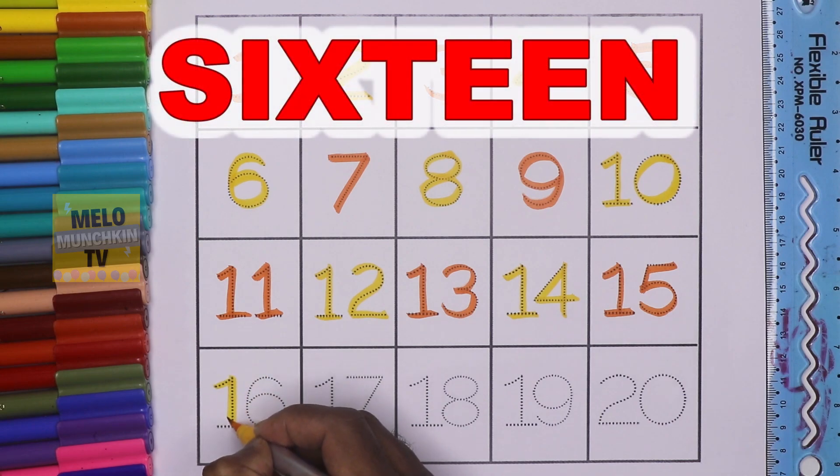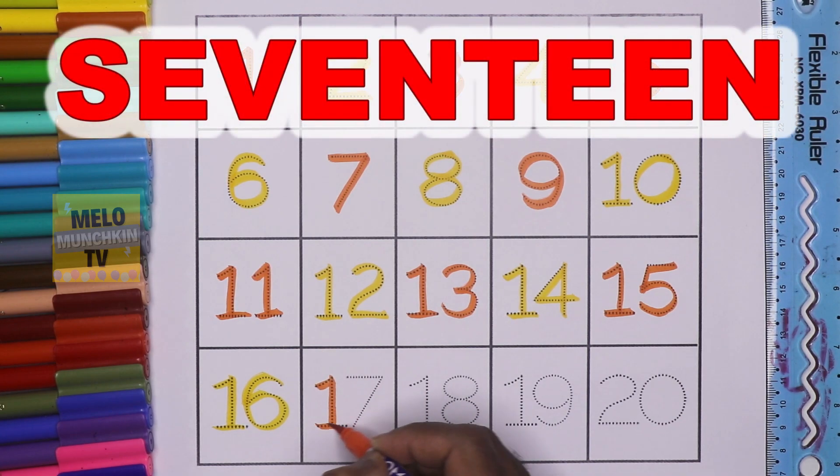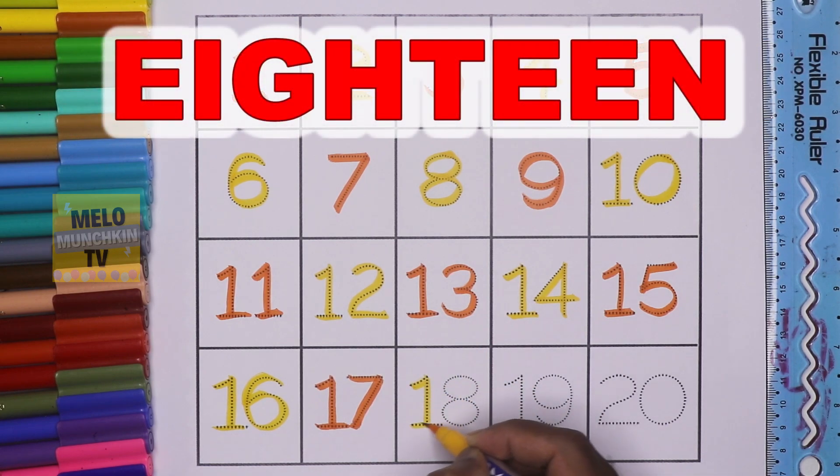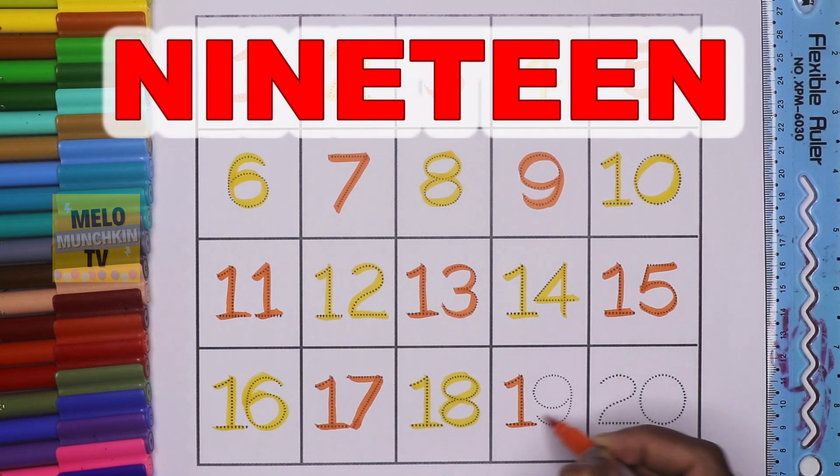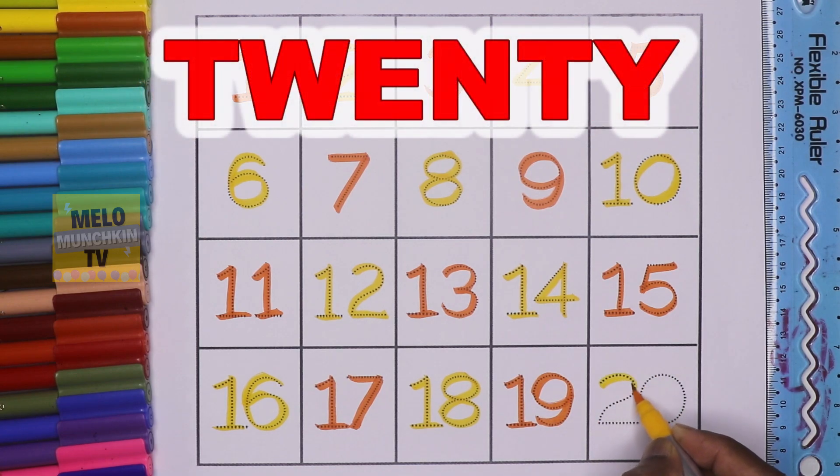This is number 16. S-I-X-T-E-E-N-16. This is number 17. S-E-V-E-N-T-E-E-N-17. This is number 18. E-I-G-H-T-E-E-N-18. This is number 19. N-I-N-T-E-E-N-19. This is number 20. T-W-E-N-T-Y-20.